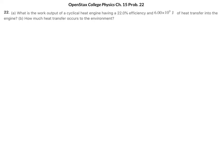Let's look at OpenStax College Physics, Chapter 15, Problem 22. What is the work output of a cyclical heat engine having a 22% efficiency and 6 times 10 to the 9th joules of heat transferred into the engine? And B, how much heat transfer occurs to the environment?